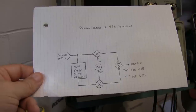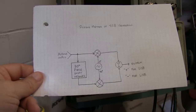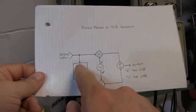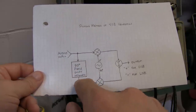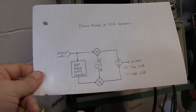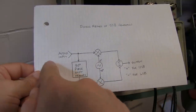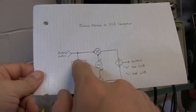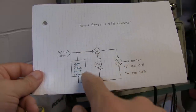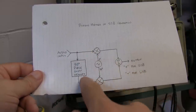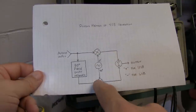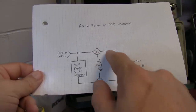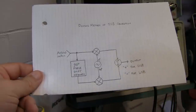Another variation is called the Weaver method, which substitutes the 90-degree phase shift network for the audio signal with another pair of quadrature mixers. The audio signal is passed into those mixers to create the audio quadrature signals, which are then fed to the next set of quadrature mixers to generate the upper and lower sideband RF signal.